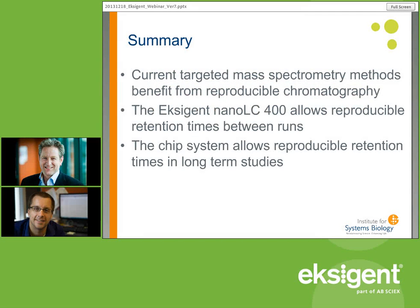In summary, I hope I've convinced you that current targeted mass spectrometry methods really benefit from reproducible chromatography, that the Exigent Nano LC 400 allows you to achieve such good chromatography, and that the chip system allows for reproducible chromatography even in long-term studies and even when you change chips and columns. Thanks very much, Sam and Rob, for the interesting presentations. I'd like to remind the audience that you can type questions in the question box — there are already a few questions that came in and I will start asking those.